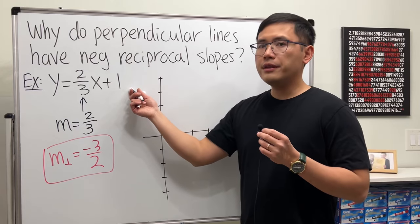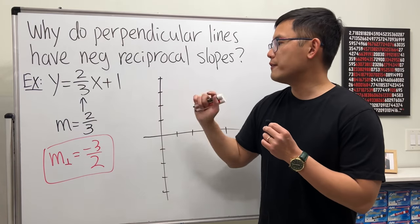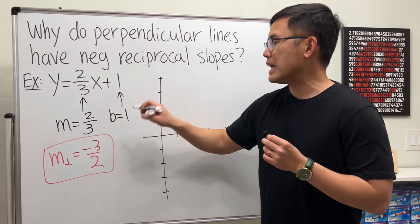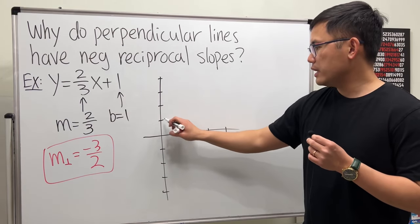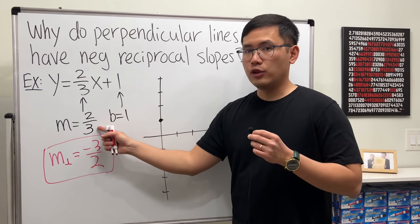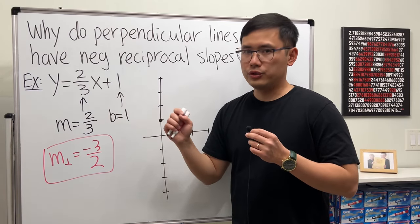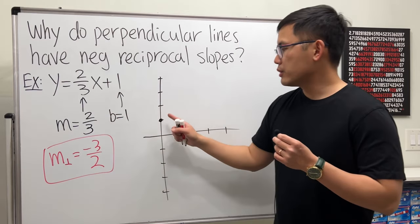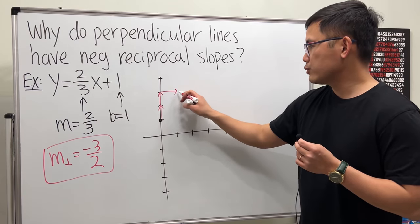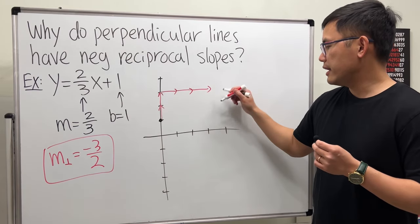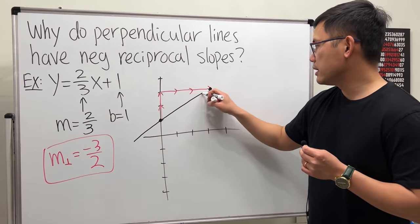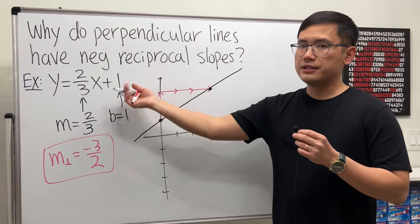Alright, let's go ahead and graph this equation. And to do so, we start with the one first, because this right here tells us the y-intercept. So we go to the y-axis, and then we go to 1. And then, from this point, we look at the slope. 2 over 3, which tells us to go up twice from here. And then the 3 tells us to move to the right 3 times. And then, we will have our second point. Then we can just go ahead and connect the dots. And that will be the graph for this equation.